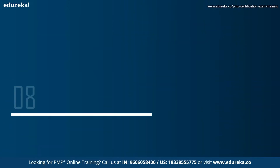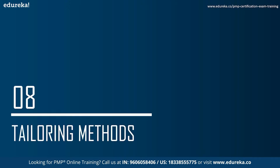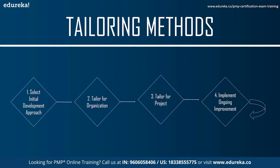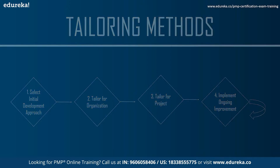Now let's understand tailoring methods. Tailoring as outlined in PMBOK 7 has four steps. The first step is to select the initial development approach — choose an approach best suited to the endeavor. The second step is to tailor for the organization — modify based on organizational requirements. The third step is to tailor for the project — adjust based on size, criticality, and other factors. The fourth step is to implement ongoing improvement — inspect and adapt continuously.